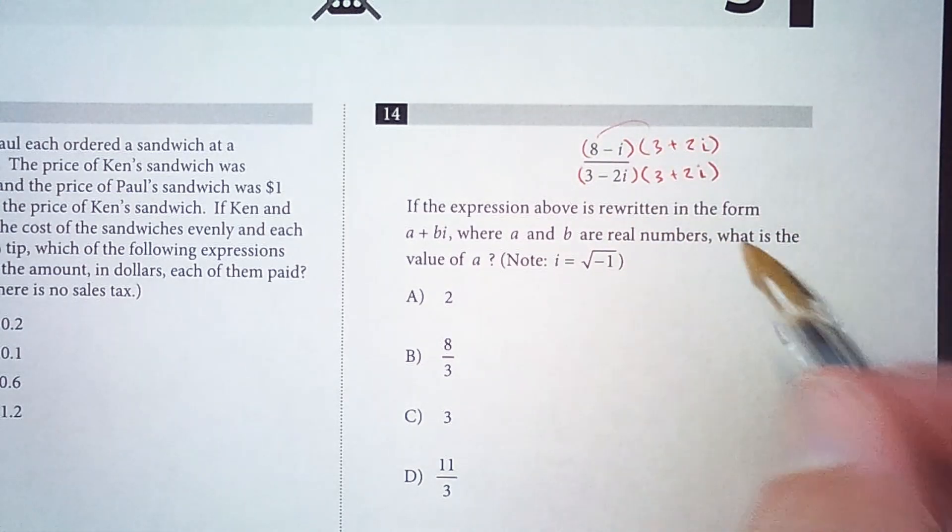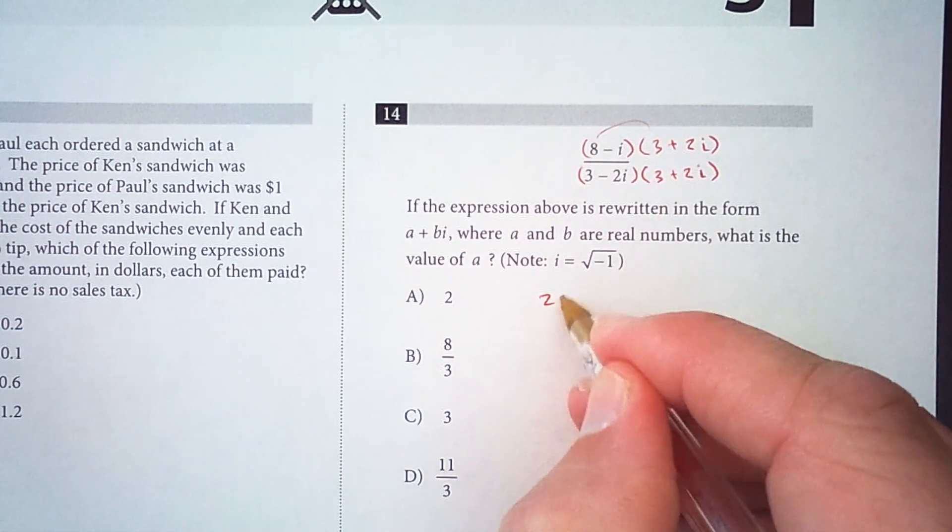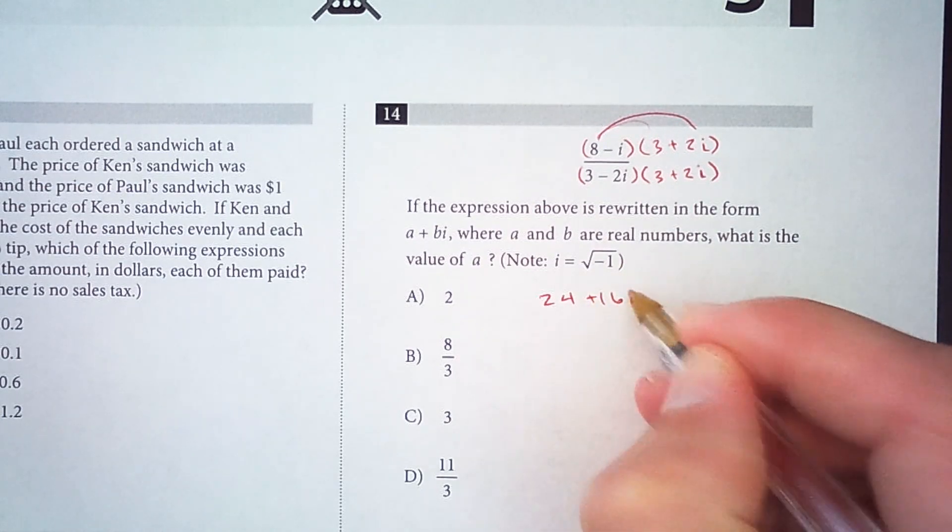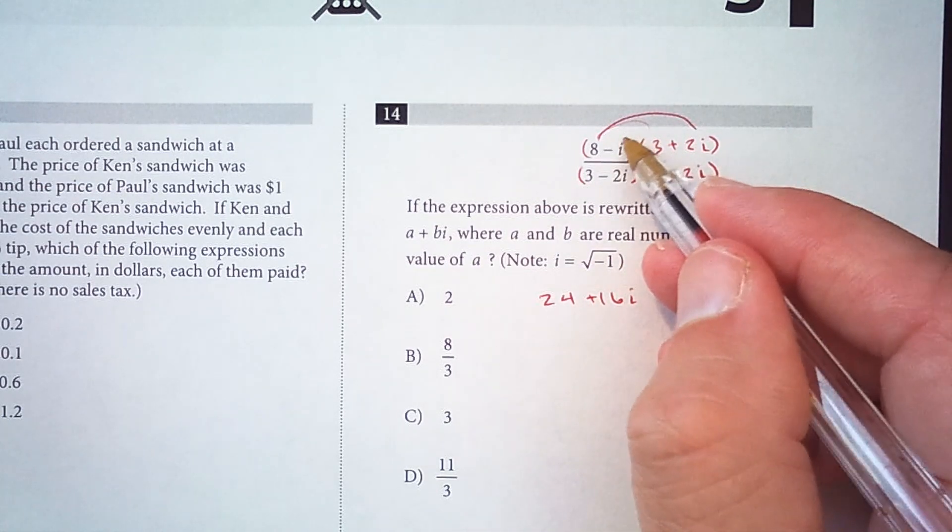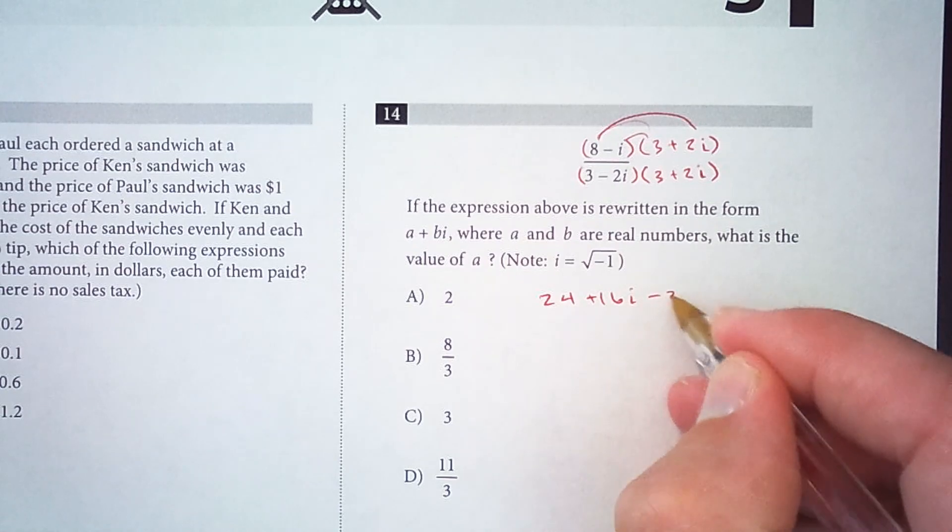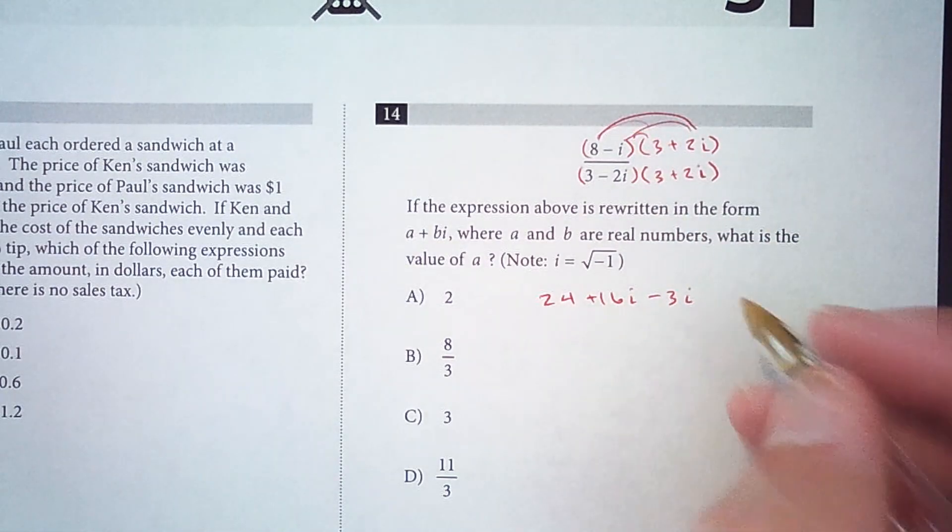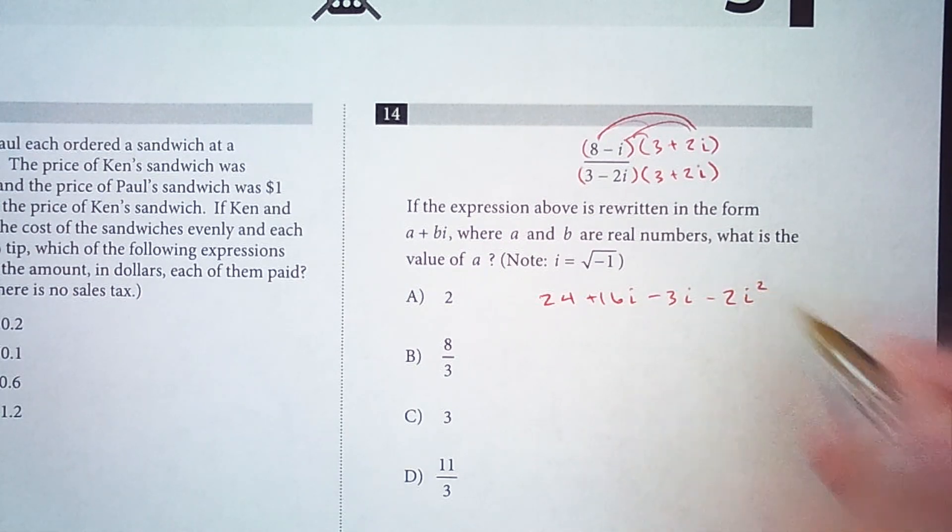As we distribute here, we have 8 times 3 is 24, 8 times 2i is 16i, negative i times 3 is negative 3i, and then negative i times positive 2i is negative 2i squared.